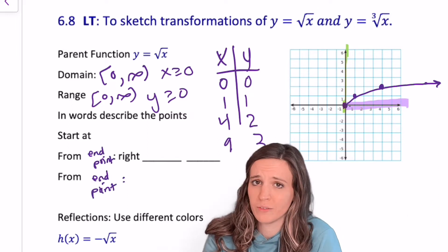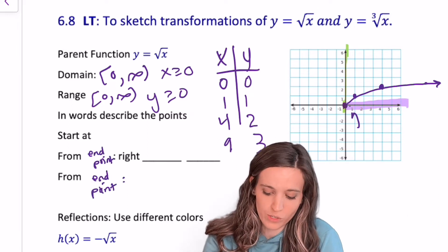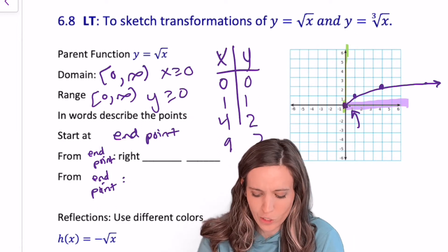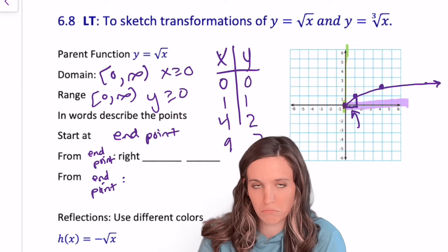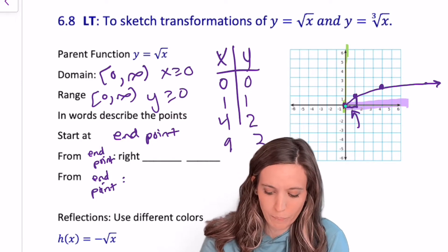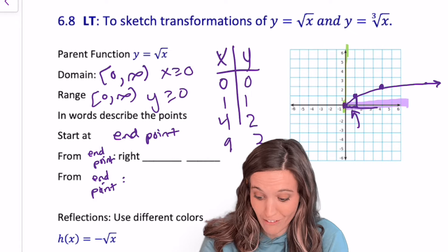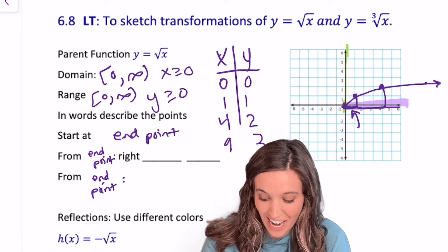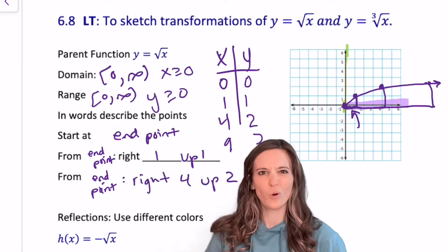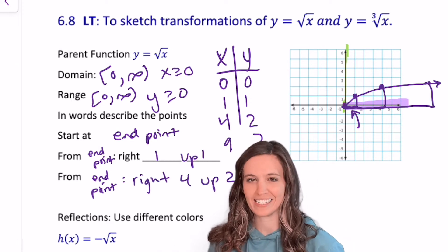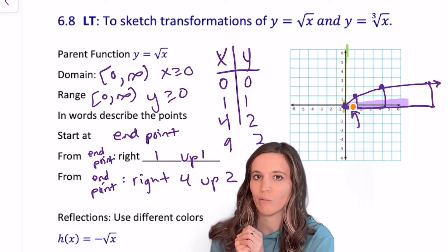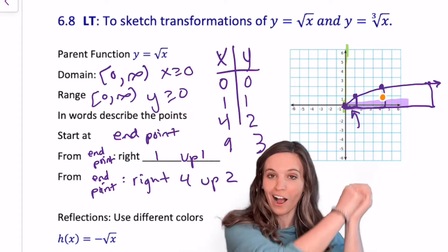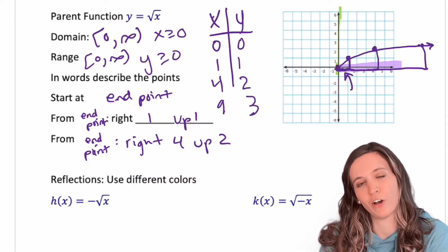Examining the parent function: we start at the endpoint 0, 0. From that endpoint, we go right 1 and up 1. Back to the endpoint: right 4 and up 2. For another point: right 9 and up 3. This is similar to quadratics — we have pattern points to follow. Start at the endpoint, right 1, up 1; back to the endpoint, right 4, up 2. Now let's look at transformations.